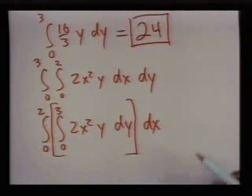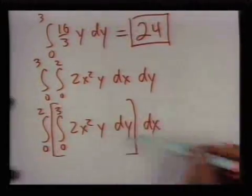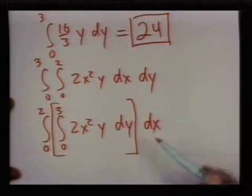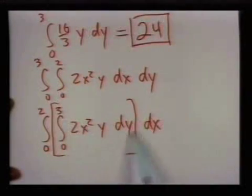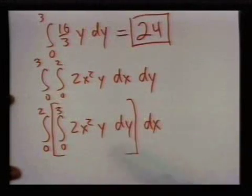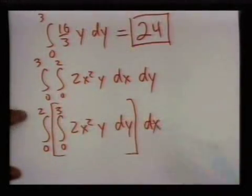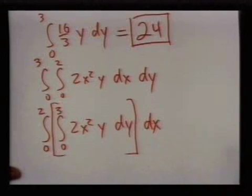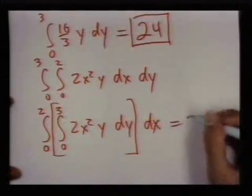And it turns out that if we were to go through the whole process of evaluating this, we'd go through evaluating this integral to get something in terms of x, and then we'd integrate with respect to x to get a number. We would also get 24.